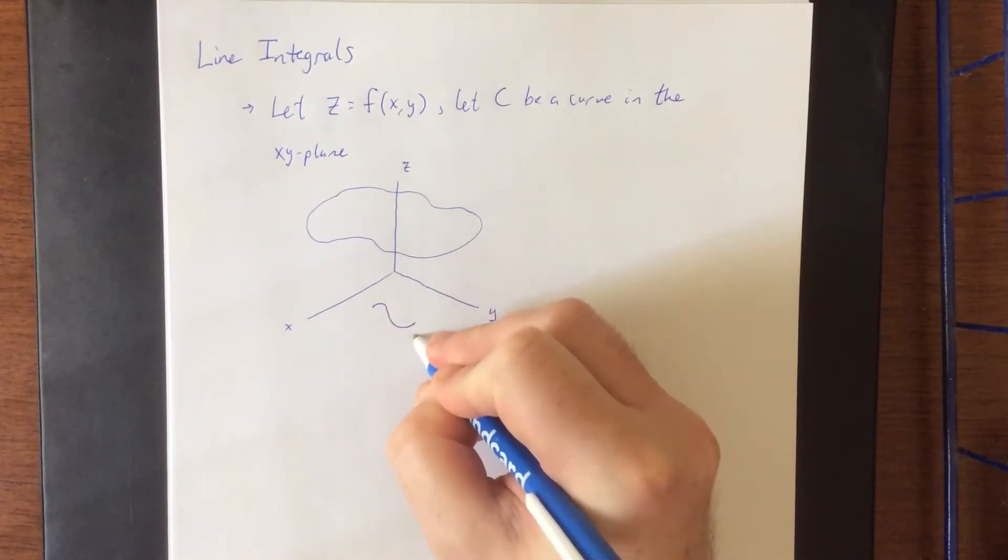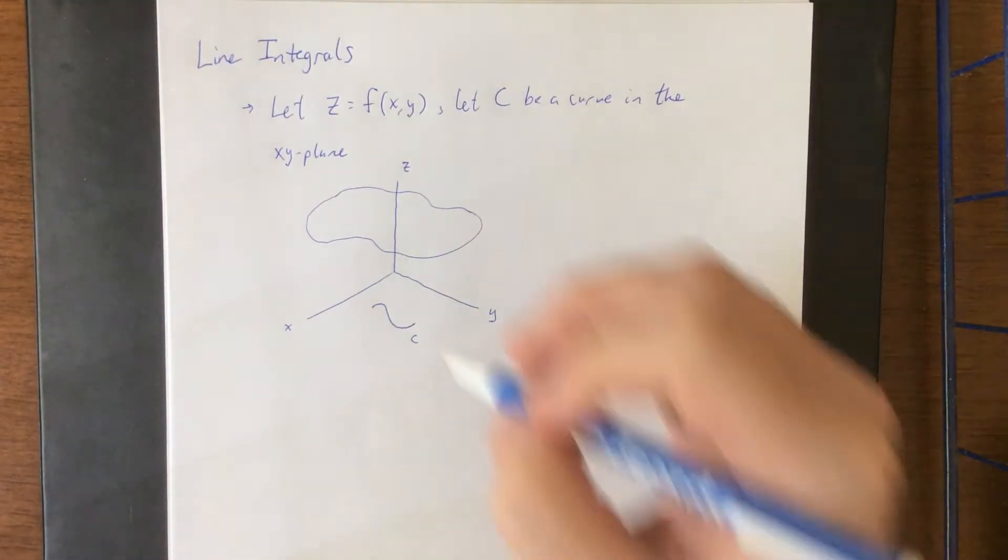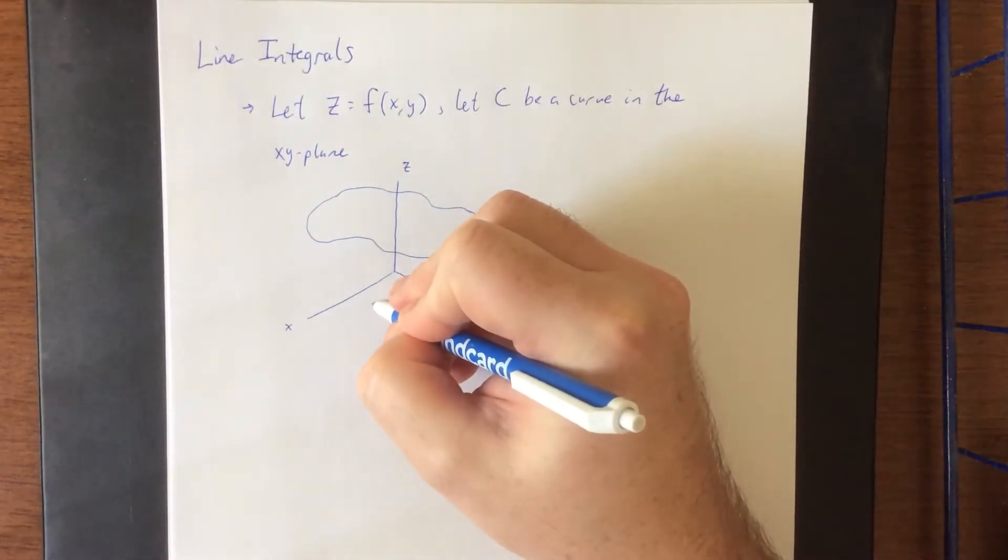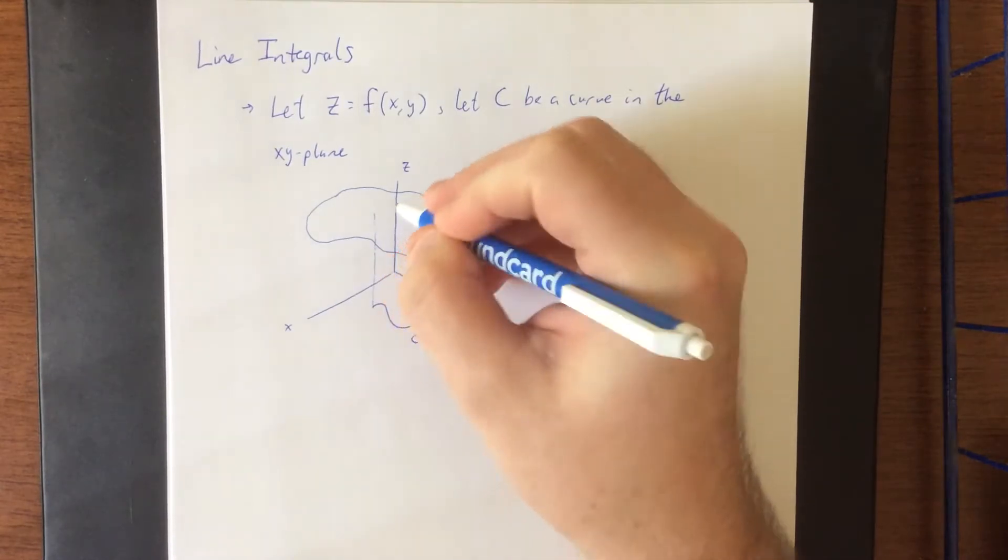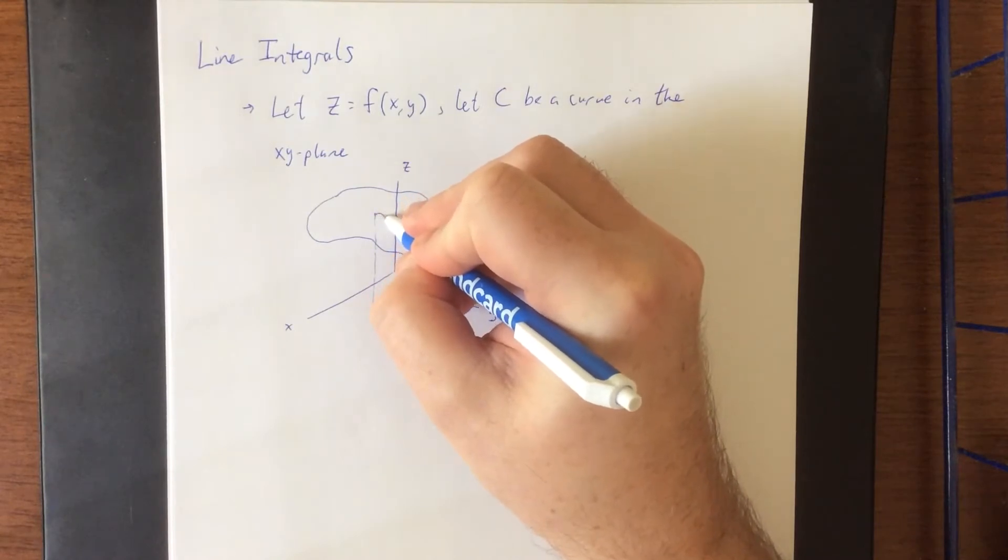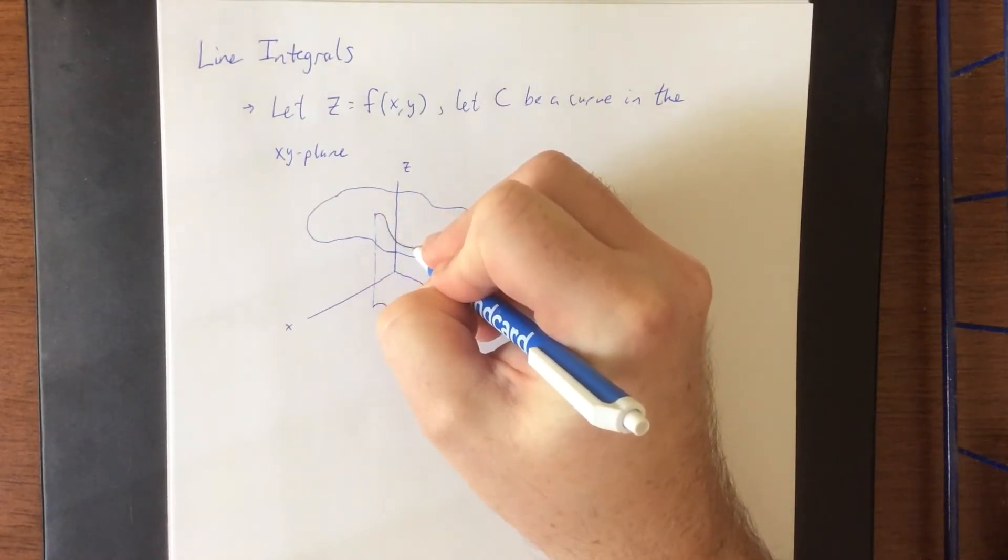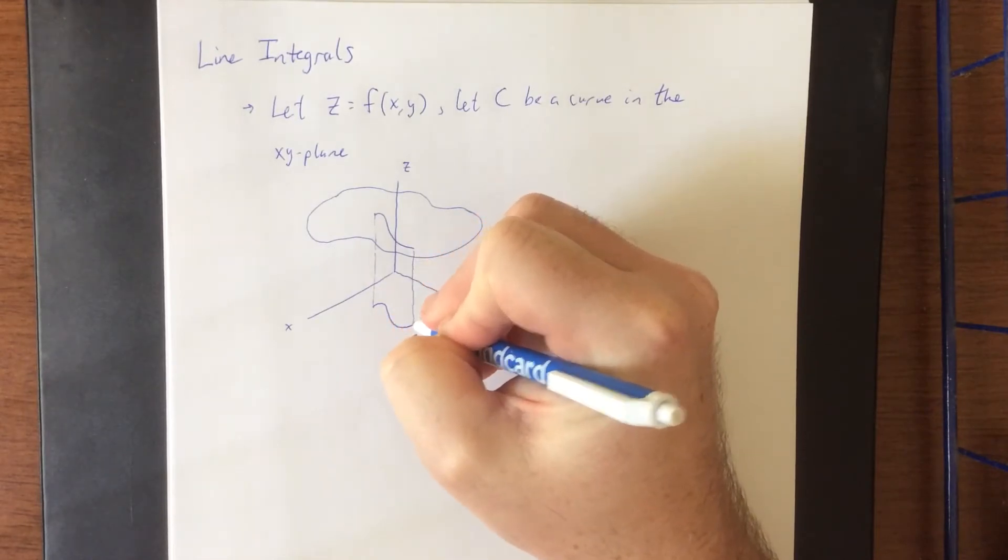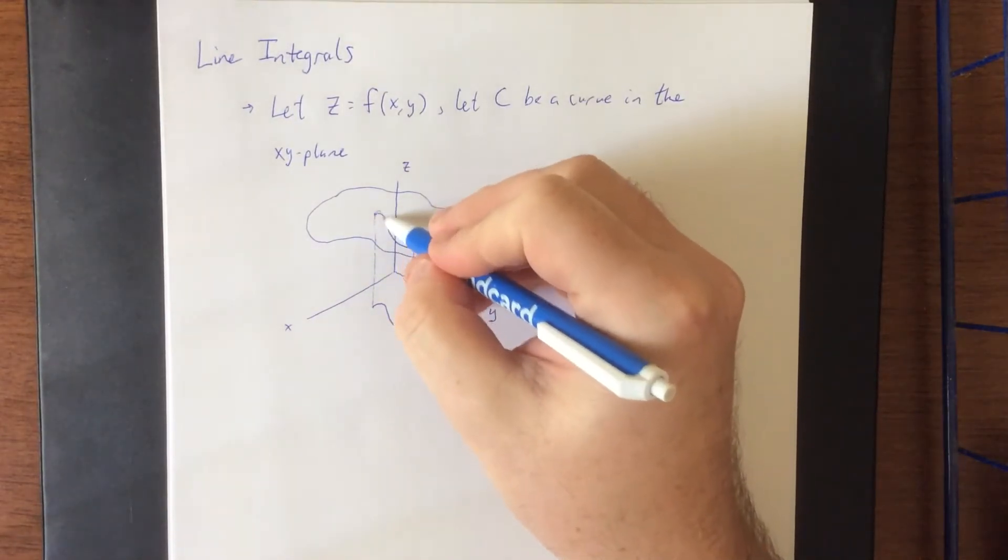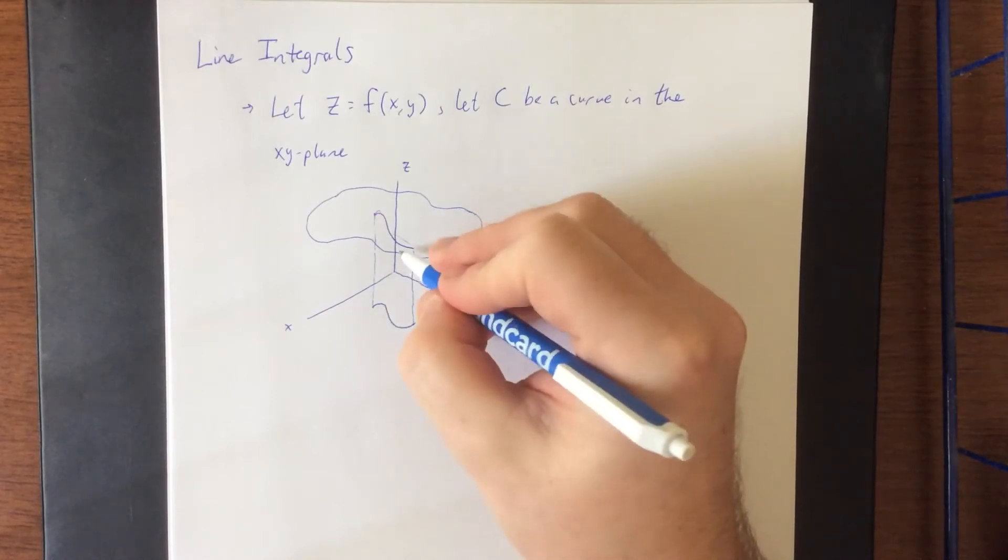We're going to refer to this curve as C. Now associated with C, if we look above C to this surface that we have above and suppose that we're interested in calculating the amount of area that lies below the surface and above the curve C.